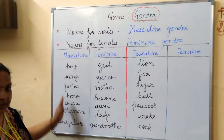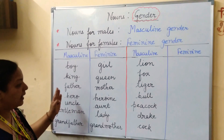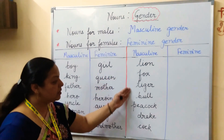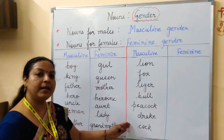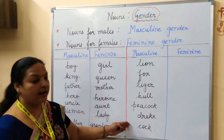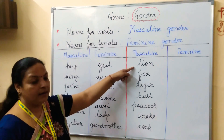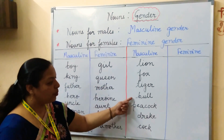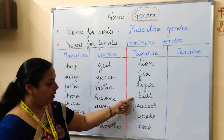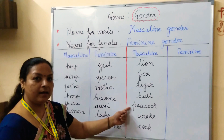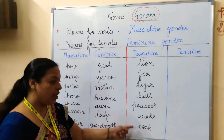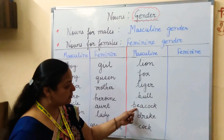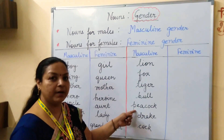These are persons. In the same manner, we have animals in masculine gender as well. The examples are: lion, fox, tiger, bull, peacock, drake, cock. These are all animals, and peacock is also a bird.